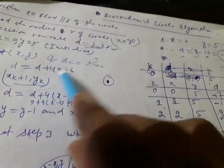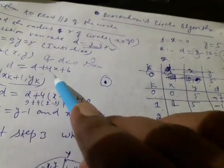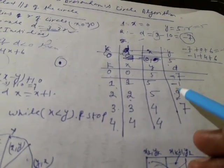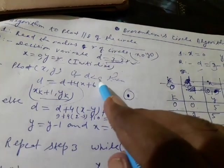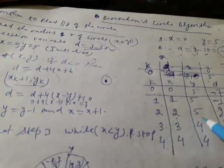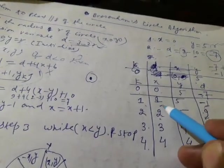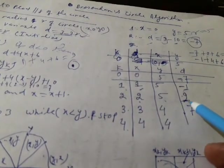Again we calculate the decision parameter. d value is minus 7, initial x is 0, so 4 times 0 is 0, plus 6 gives us 6, minus 7 plus 6 gives minus 1. So d is minus 1, which is still less than 0. Therefore we increase x by 1 and y remains the same. Again we calculate d: minus 1 plus 4 times 1 plus 6 equals minus 1 plus 10, which is 9.